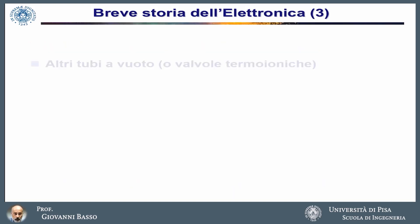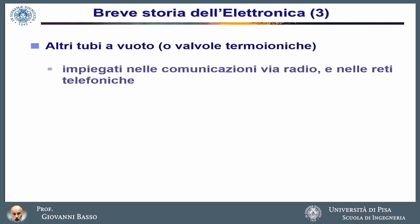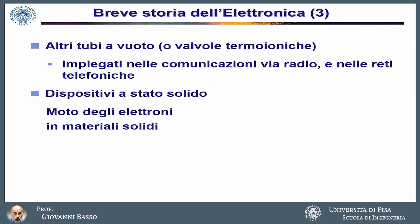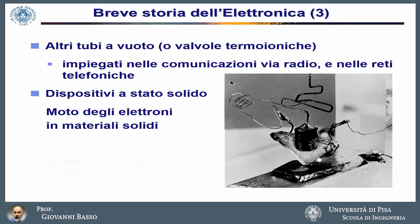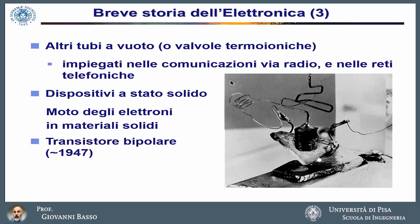In the next years, other similar devices were invented, which were called empty tubes or thermionic valves, and that found an application in radio communications and in the first telephone networks. Fleming collaborated with Guglielmo Marconi, the radio inventor, in the period in which Marconi operated in Great Britain. An important step in the history of electronics was made with the invention of the first solid devices — electronic devices in which the motion of electrons happened through solid material, unlike the empty tubes in which the electrons moved through the void. The first solid device was the bipolar transistor, created in 1947. This invention brought its inventors the Nobel Prize for Physics.